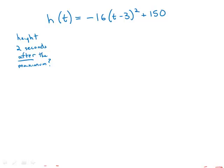If you remember vertex form for a parabola, you can apply that, but suppose we don't remember that. What we notice is that this piece right here — a number squared — is almost always going to be positive. And then positive times a negative is always going to be negative. So normally this whole thing is going to be negative plus 150, making it less than 150. The only exception will be when the expression in parenthesis equals zero. Then this whole first term is zero, and we have a height of 150, which would be the maximum height.